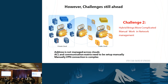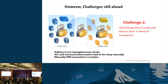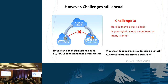The second biggest challenge is that networking planning and security policies are not fully unified across cloud boundaries. ACL and communication metrics need to be set up manually after adjusting or migrating workloads between cloud presences. Rescheduling workloads across clouds brings tremendous complicated manual work in networking and management environments.